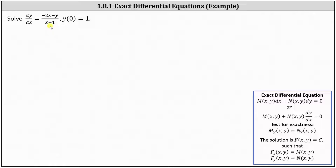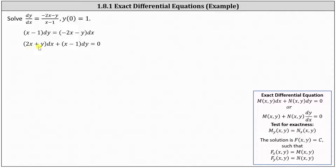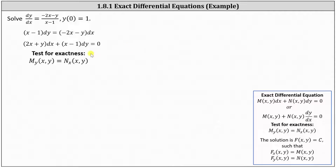Here we have an initial value problem. Cross-multiplying gives (x − 1) dy = (−2x − y) dx. Setting the equation equal to zero by adding (2x + y) dx to both sides gives (2x + y) dx + (x − 1) dy = 0. In this form, M(x,y) = 2x + y and N(x,y) = x − 1. We check for exactness by verifying that the partial of M with respect to y equals the partial of N with respect to x.